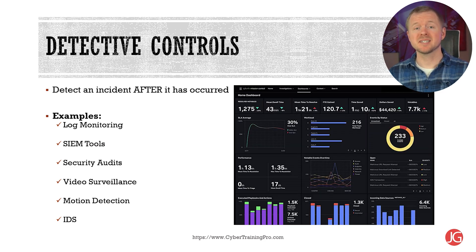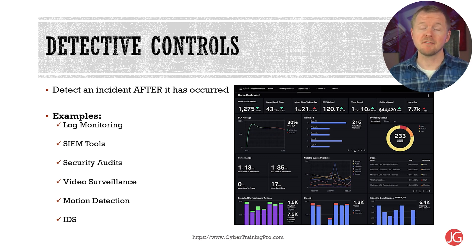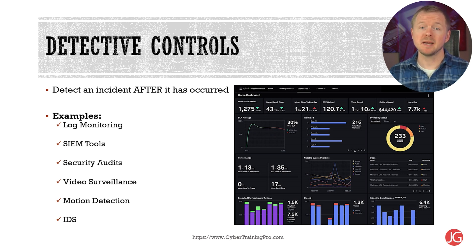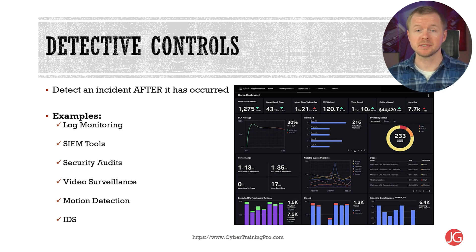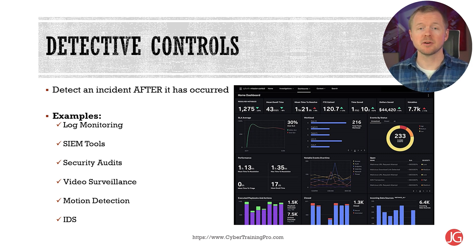Detective controls help us detect an incident after it's already occurred. Examples include log monitoring to see spikes in traffic for further analysis, SIEM or security information and event management tools to correlate events and track an attacker's history through our network, security audits to evaluate how well our security complies with policies, video surveillance to record activity, motion detection to set off alarms if potential intruders are in an area, and IDS or intrusion detection systems to detect malicious activity and generate an alarm.